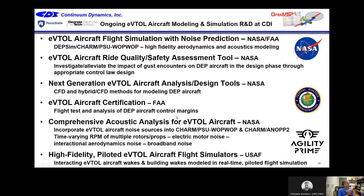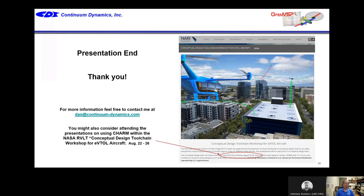On ongoing research: we're working with NASA, the FAA, and the Agility Prime program to further enhance CHARM. We're looking at noise prediction for eVTOL aircraft, ride quality and safety assessment for eVTOL aircraft, next-generation higher-fidelity design tools, and FAA certification. One exciting project is getting interactional aerodynamics into real-time flight simulations for eVTOL aircraft — we're already doing this for conventional helicopters, and if we can have interactional aerodynamics in real time for eVTOL flight simulation, that would be huge for aircraft safety. Thank you. Consider attending the NASA RVLT workshop August 22nd to 26th. For more information, my email is Dan at continuum-dynamics.com.